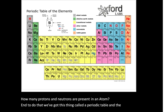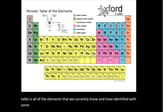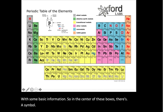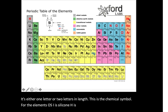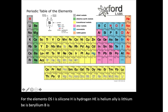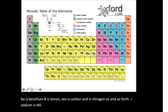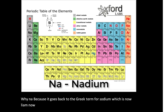The periodic table lists all of the elements we currently know and have identified, with some basic information. In the center of each box there's a symbol — either one or two letters — which is the chemical symbol for the element. So Si is silicon, H is hydrogen, He is helium, Li is lithium, Be is beryllium, B is boron, C is carbon, N is nitrogen, and so forth. Sodium is Na — because it goes back to the Greek term for sodium, which is Natrium, so it becomes Na.